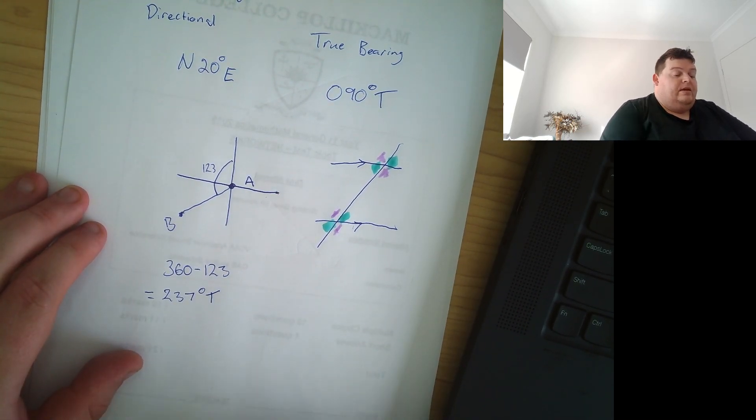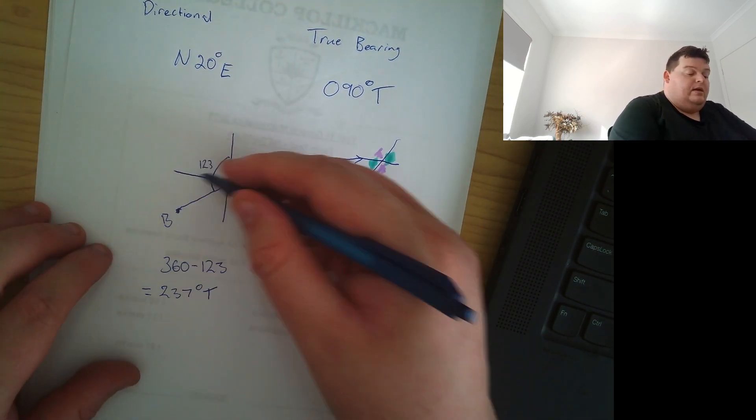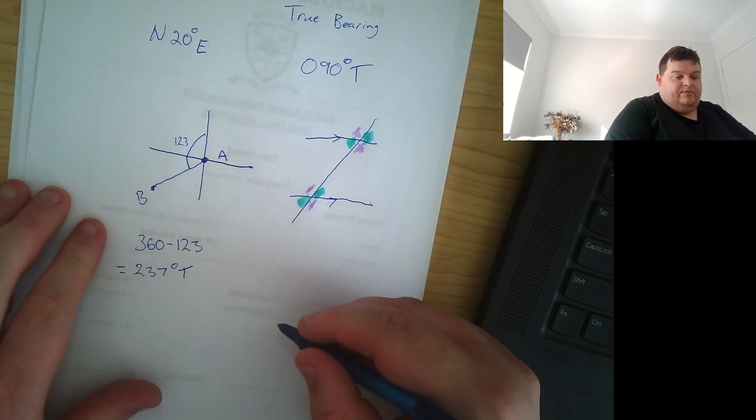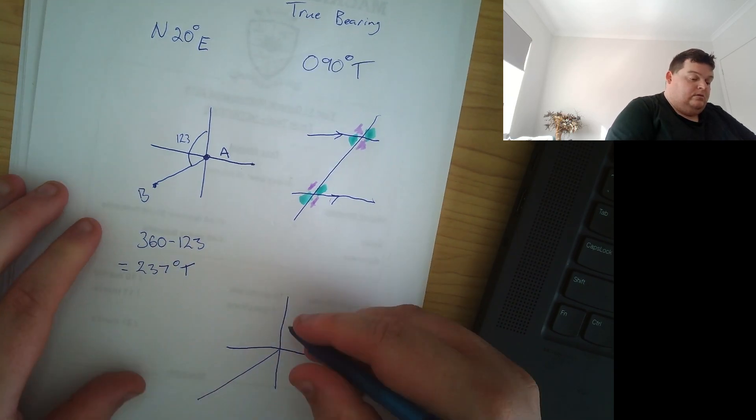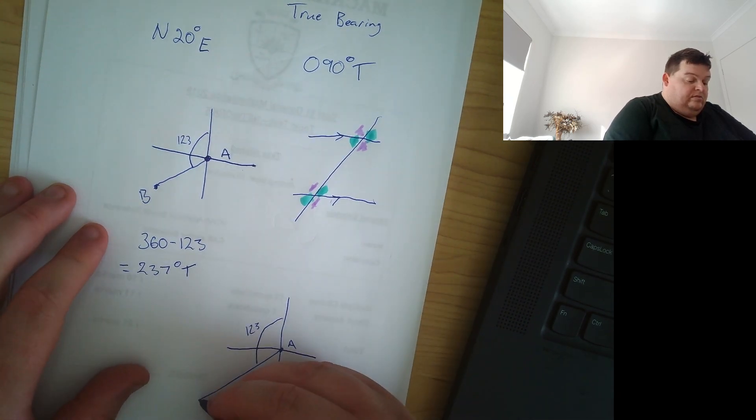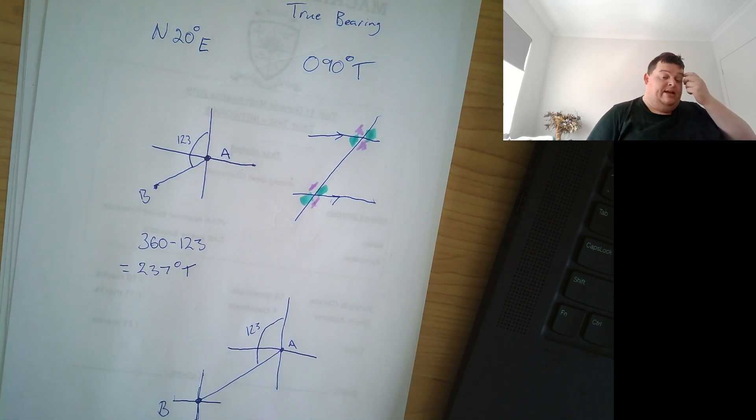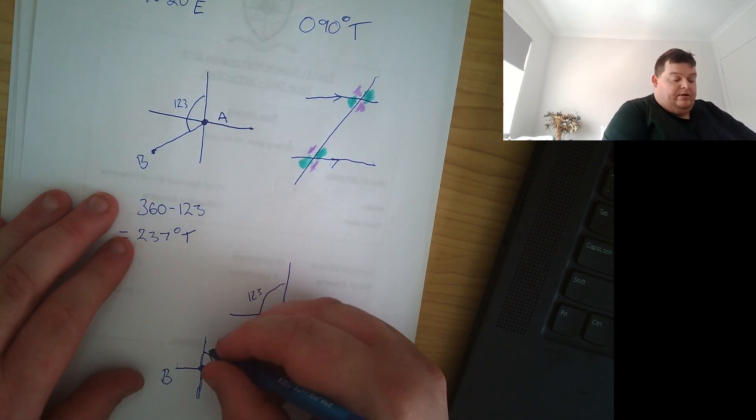Alright. If I want to know my bearing back, that's a little bit harder. So what I encourage people to do is when you've got a question like this, I'm just going to redraw it over here. Is whenever you have another point, I encourage you to draw the Cartesian plane again or the compass again. Okay. So now we want to know this angle here, right, because true bearing is always measured from directly north, so we want to know what this is.